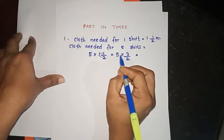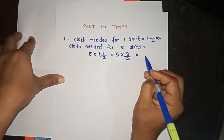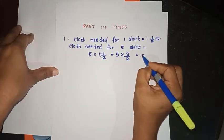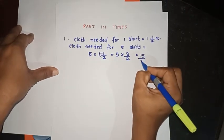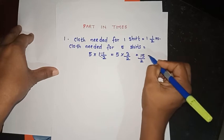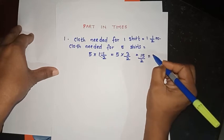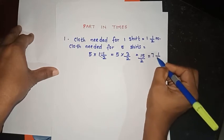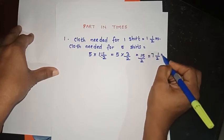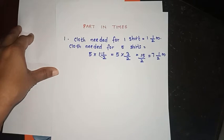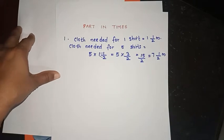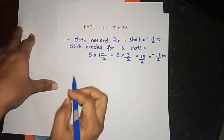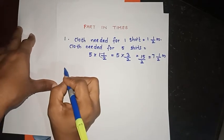5 into 3 is 15, so we get 15 by 2, which equals 7 and 1 by 2 meters.